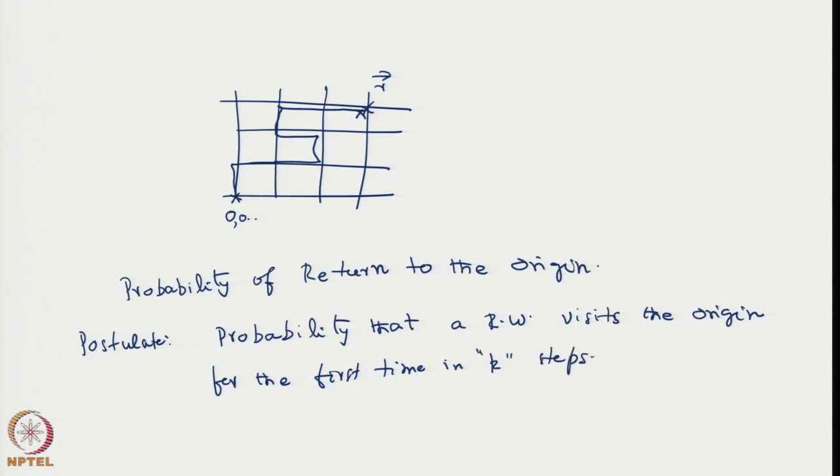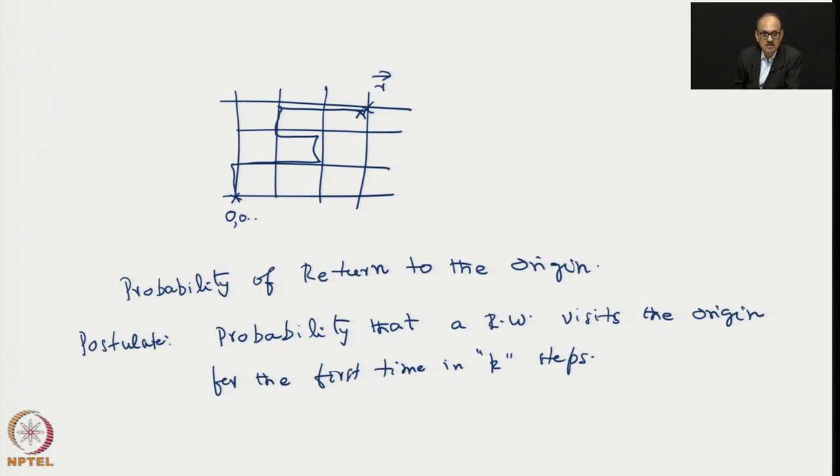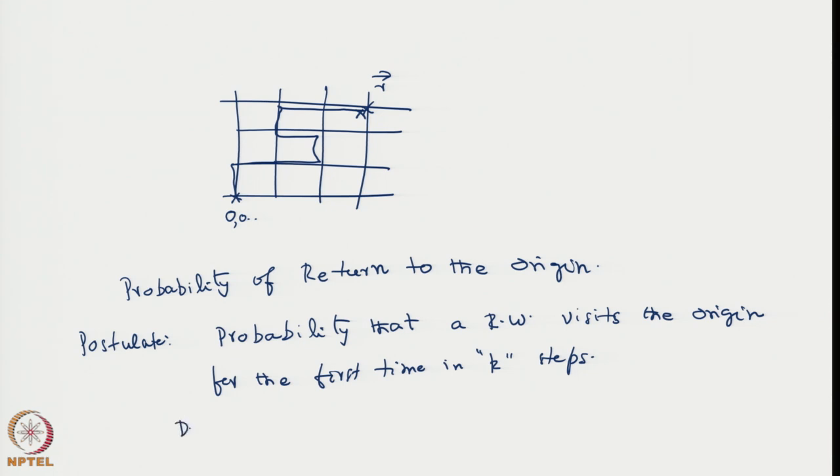For example, in a one-dimensional walk, the probability that he visits in the first step is 0. But in the second step there is a probability that he would come back because in the first step he would have gone to sides minus 1 or plus 1. One has a finite probability of visiting the origin in finite number of steps.